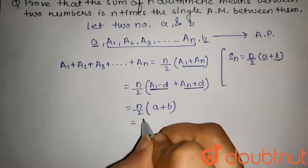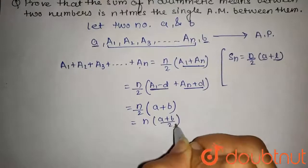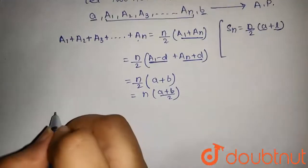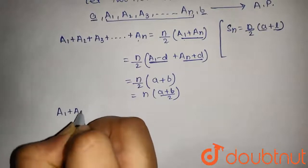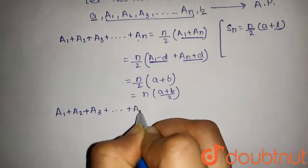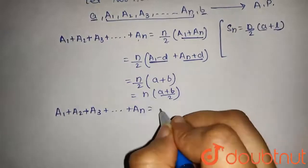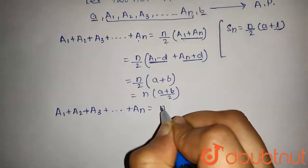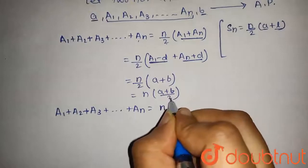Now this can also be written as n into (a + b)/2. And this is equal to A₁ + A₂ + A₃ and so on till Aₙ, that is the sum of arithmetic means. This will be equal to n into, now (a + b)/2 is what?